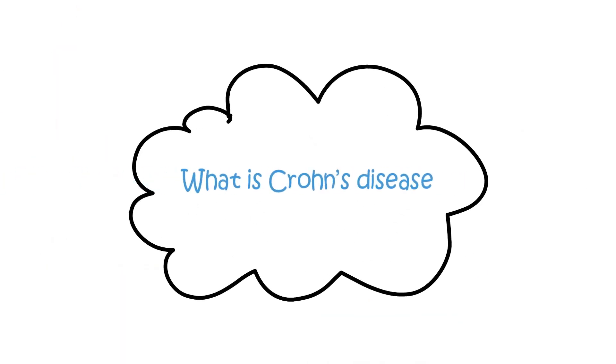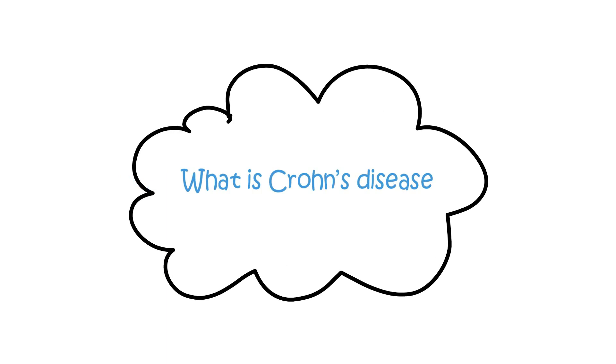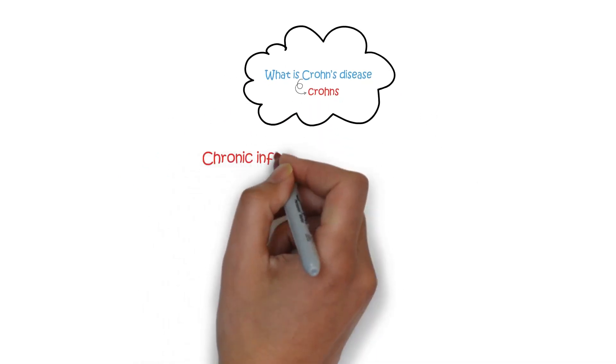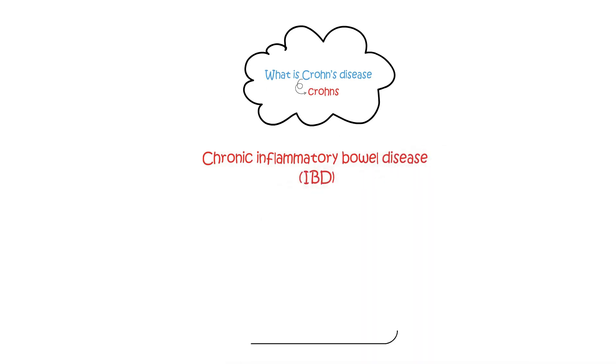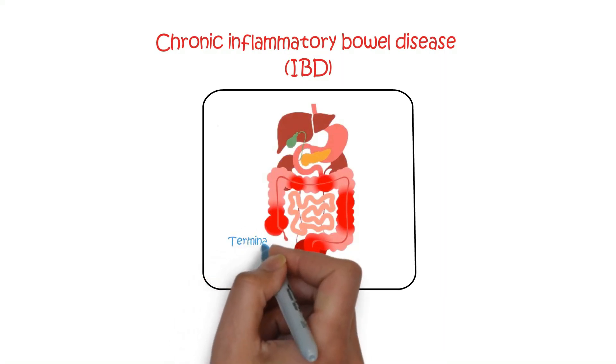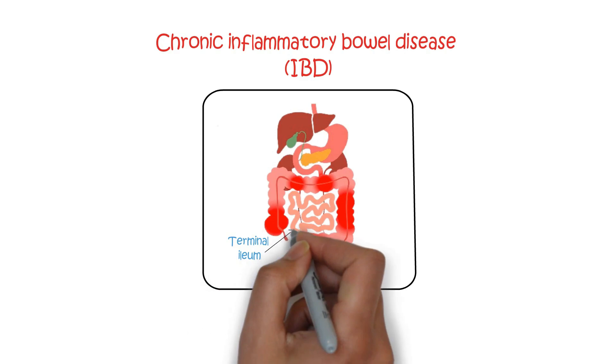What is Crohn's disease? I will be referring to Crohn's disease as Crohn's. It is a chronic inflammatory bowel disease, IBD, that can affect any part of the digestive tract from the mouth to the anus. The most common area where Crohn's first occurs is the terminal ileum, which is the last part of the small intestine.